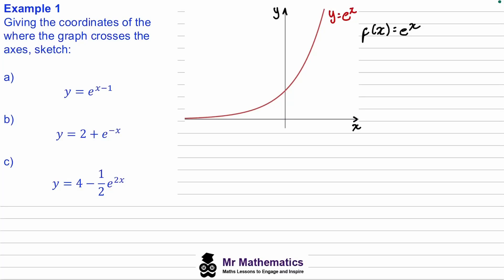In this video we're going to look at how we sketch different equations involving e to the power of x. I've sketched e to the x here. We know the intercept is when x equals zero, so we get y equals e to the zero, which is just one — so there's an intercept of one. There's an asymptote because if x tends to negative infinity, e to the negative infinity becomes one over e to the infinity, and one divided by a very large number tends to zero. This is why we get the asymptote at y equals zero. As x increases, e to the x increases exponentially. So this is y equals e to the x.